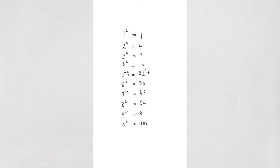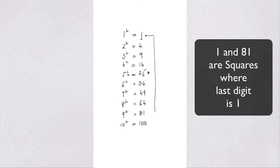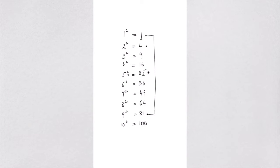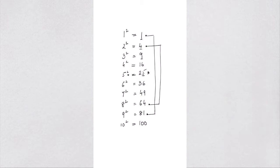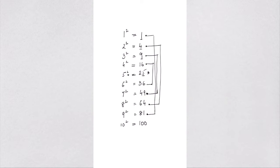Similarly, we can look at other patterns. You have 1, and there is just one other number, which is 81, whose last digit is 1. And similarly, here we have 4, and there is just one other square whose last digit is 4, which is 64. Similarly, 9 and this one other square, which is 49, whose last digit is 9. And similarly, we have 16 and this one other number, which is 36.